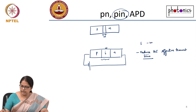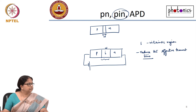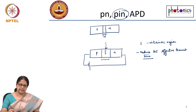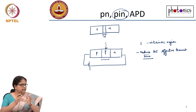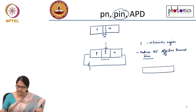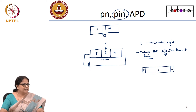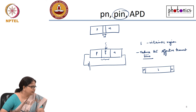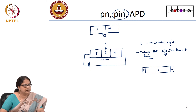In the P-I-N structure, I is the intrinsic region. The electron-hole pair gets generated in the intrinsic region. As shown in diagrams, the p is on one side, the n is on the other, and the intrinsic region is large. So the electron-hole pair is allowed to experience more drift than diffusion, and the effective time scales can be brought down.